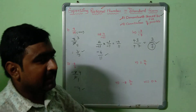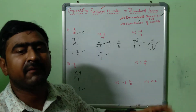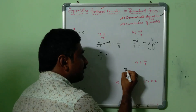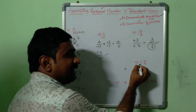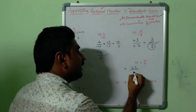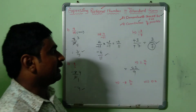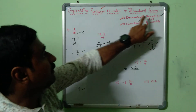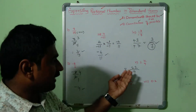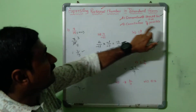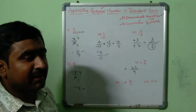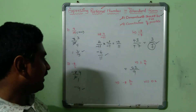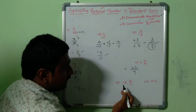Fifth example: 2 4/9, which is a mixed fraction. Converting it: 9×2=18, then 18+4=22, giving 22/9. To express in standard form — first step, denominator 9 is positive, no issue. Second step, cancellation: 22 and 9 have no common factor in any table. So 22/9 is the standard form of 2 4/9.